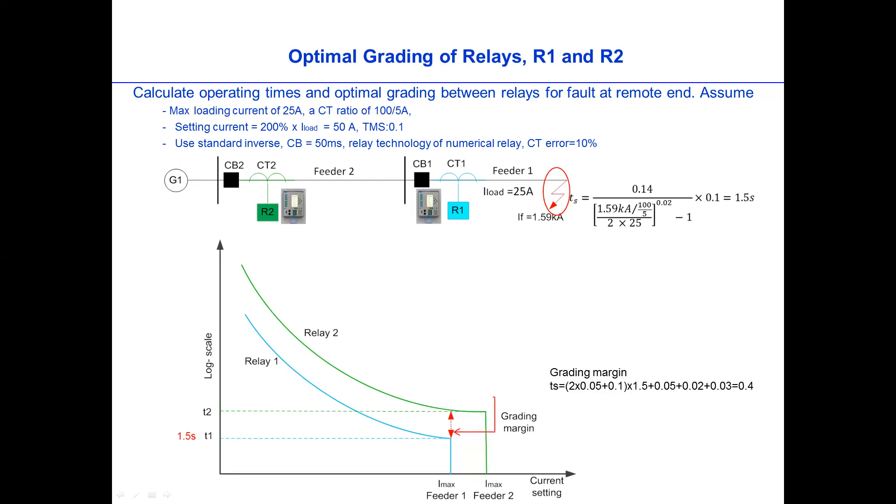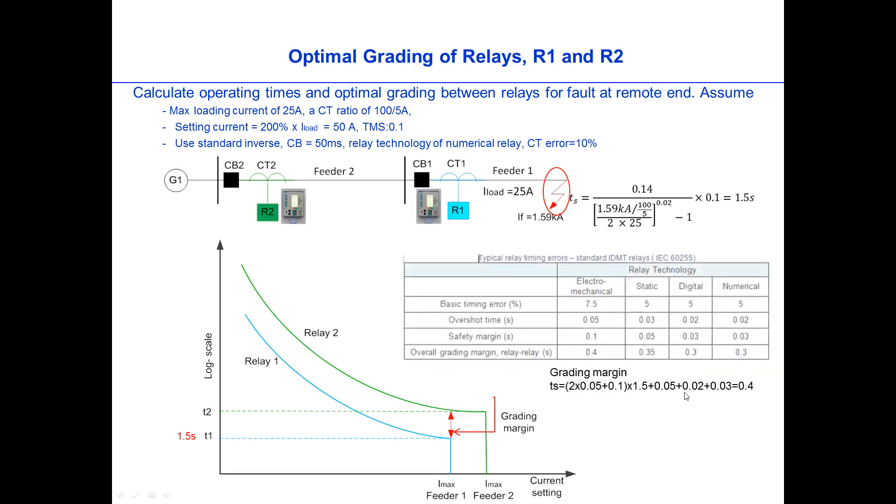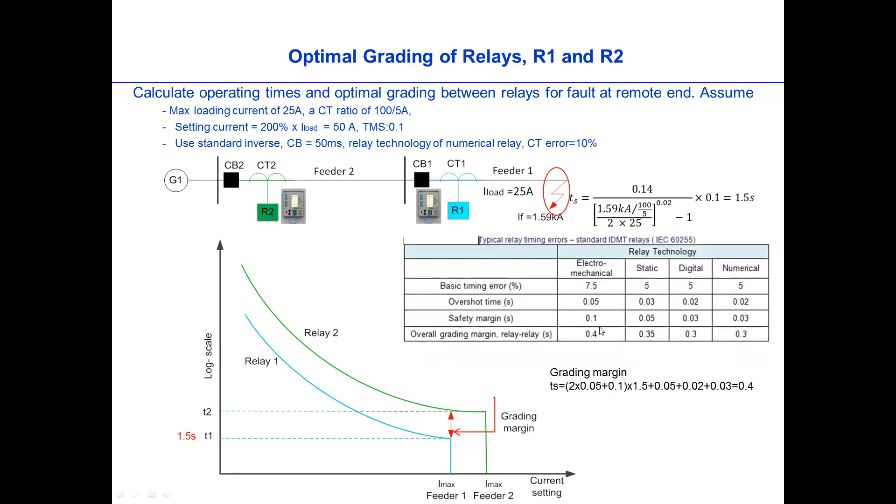And now we need to calculate the gradient margin so that Relay 2 can provide the backup protection. Basically, if this Relay 1 fails, after how long will Relay 2 trip? That time, the delay time, we call it the gradient margin. To find out the gradient margin, we'll use this formula.